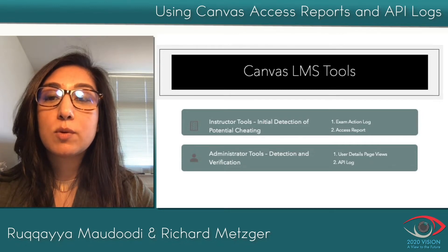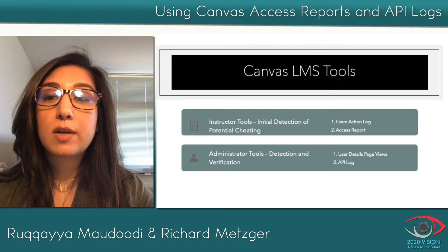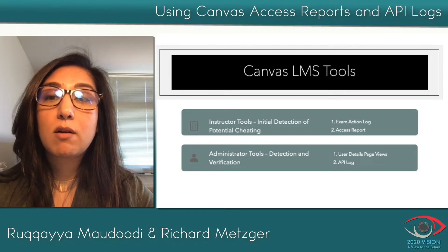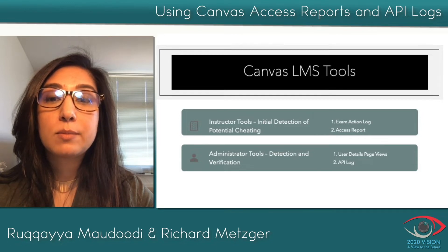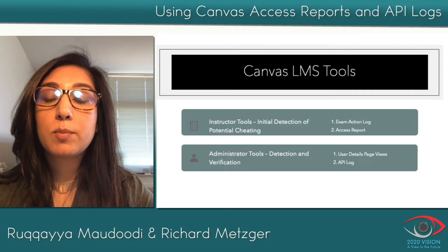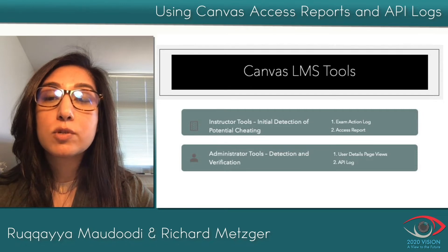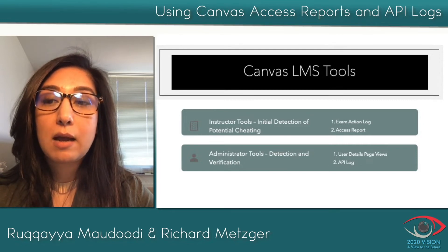You may have to explore if you are using a different LMS. The tools available for instructors to review if cheating has occurred include the exam action log and the access report. The tools available for administrators to verify a claim of cheating include the user detail page views and the application program interface log, or API. Our division has dedicated academic integrity facilitators, or AIFs, who double-check all claims of cheating so that only valid cases go forward and sanctions are applied appropriate to the violation — preventing instructors from being either too harsh or too lenient, and ensuring sanctions are uniformly and fairly applied.